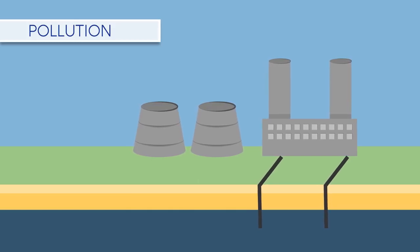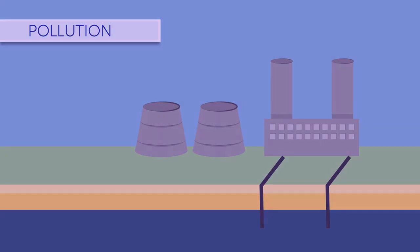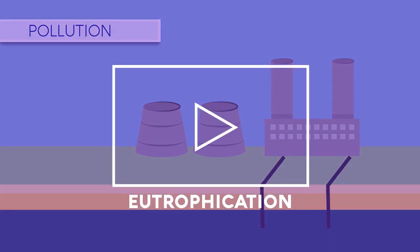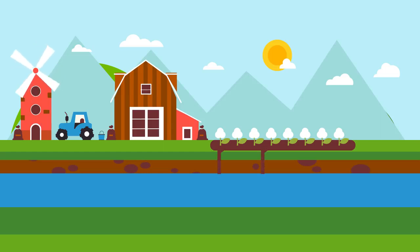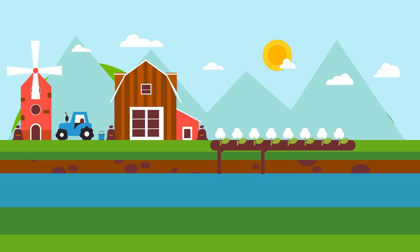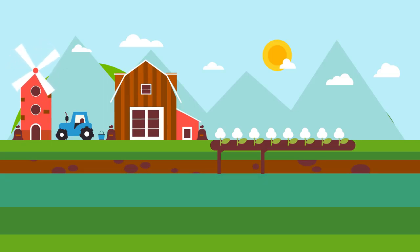Another big water pollution problem is eutrophication. Phosphorus and nitrogen in fertilizers run off agricultural fields and pass into rivers. These surplus nutrients cause algae to bloom, which then starves other aquatic species of oxygen and light, causing them to die.